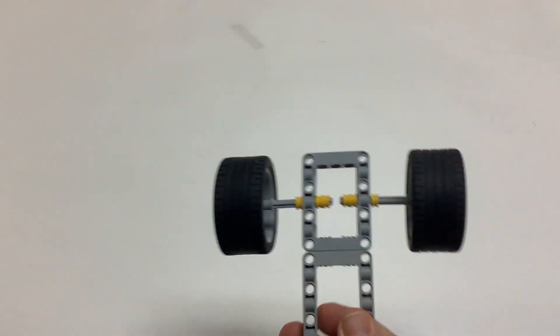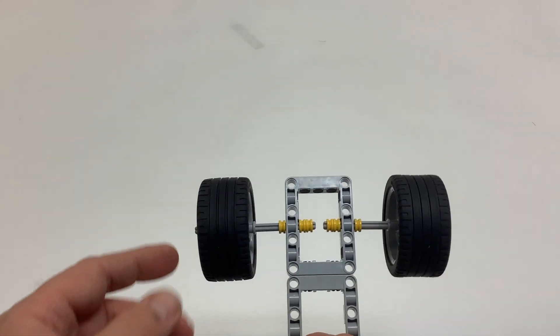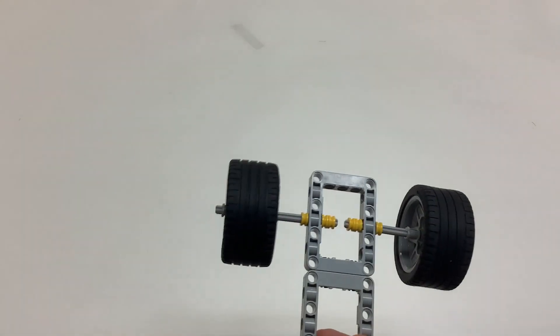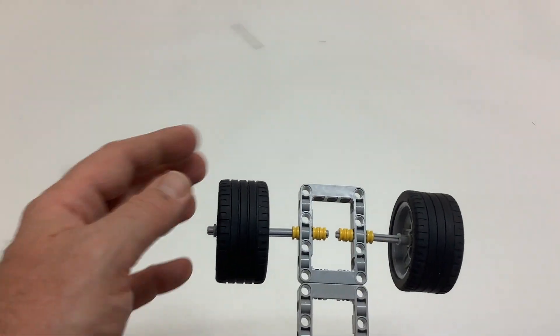For our first demonstration, we have just two wheels that are going to spin freely. You can see they're not connected or anything like that.